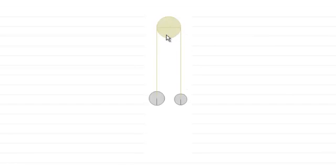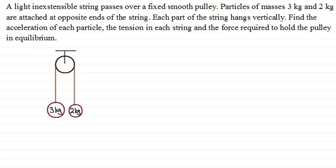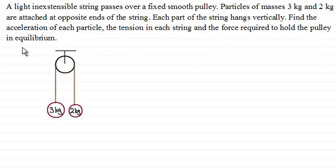In this tutorial, we'll be looking at two particles connected by a light inextensible string passing over a smooth fixed pulley. We'll be releasing the particles from rest and studying their motion, looking at tensions and accelerations generally. Suppose particles of mass 3 kilograms and 2 kilograms are attached at opposite ends of the string, each part hanging vertically. We need to find the acceleration of each particle, the tension in the string, and the force required to hold the pulley in equilibrium.